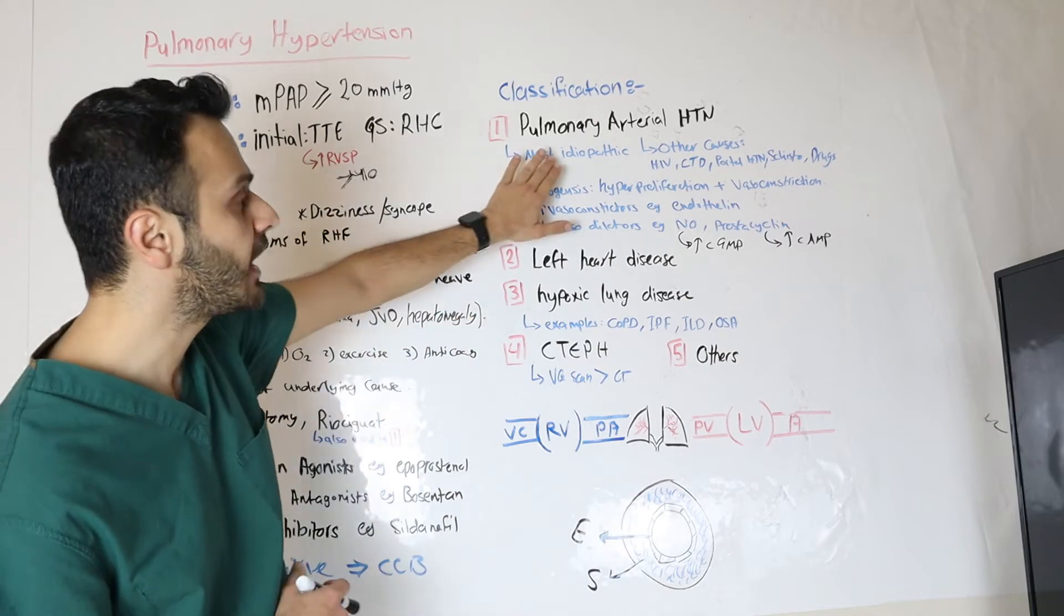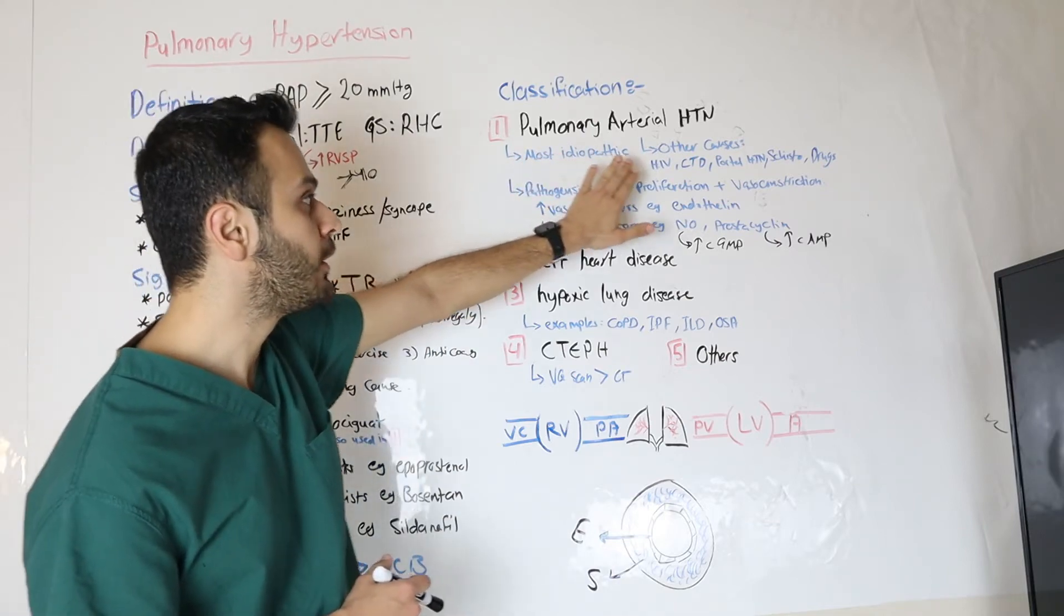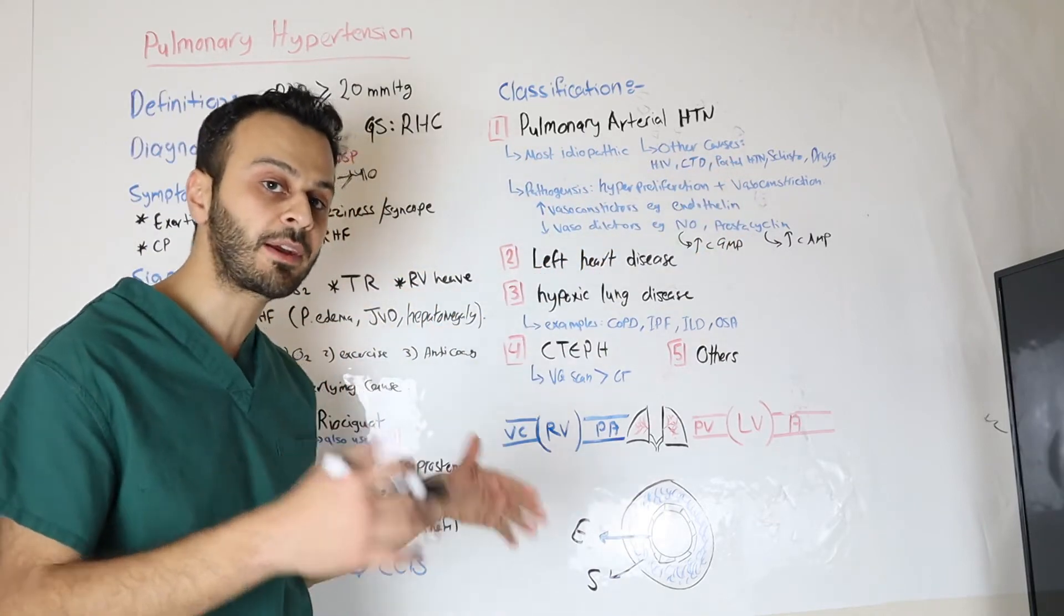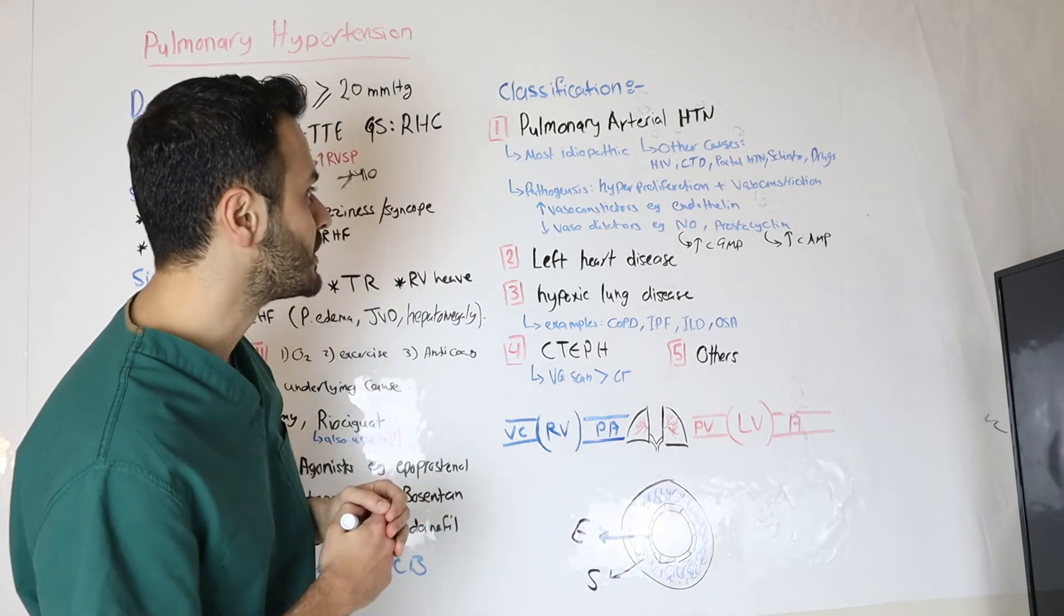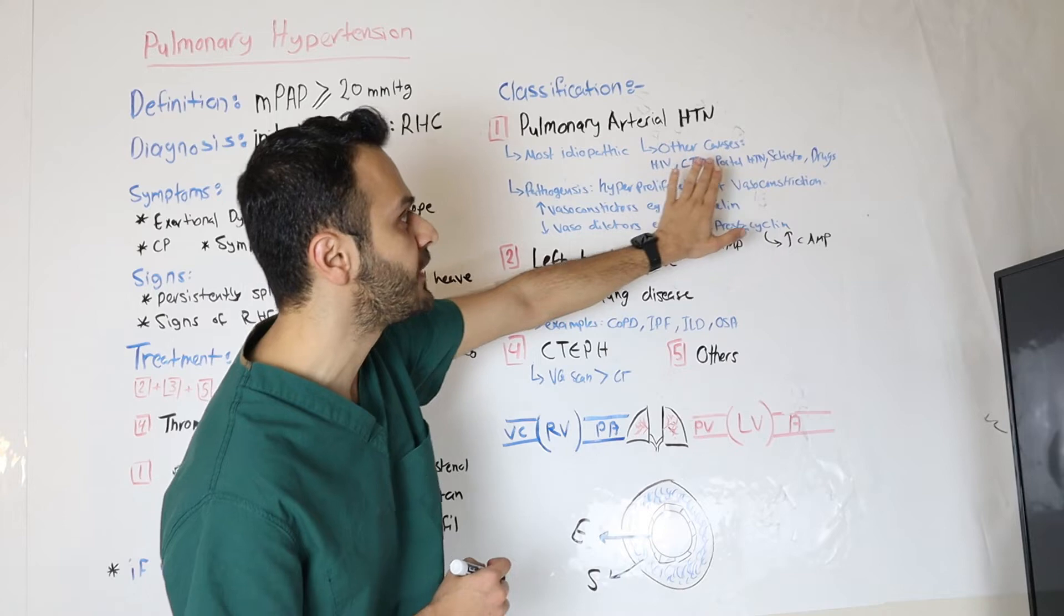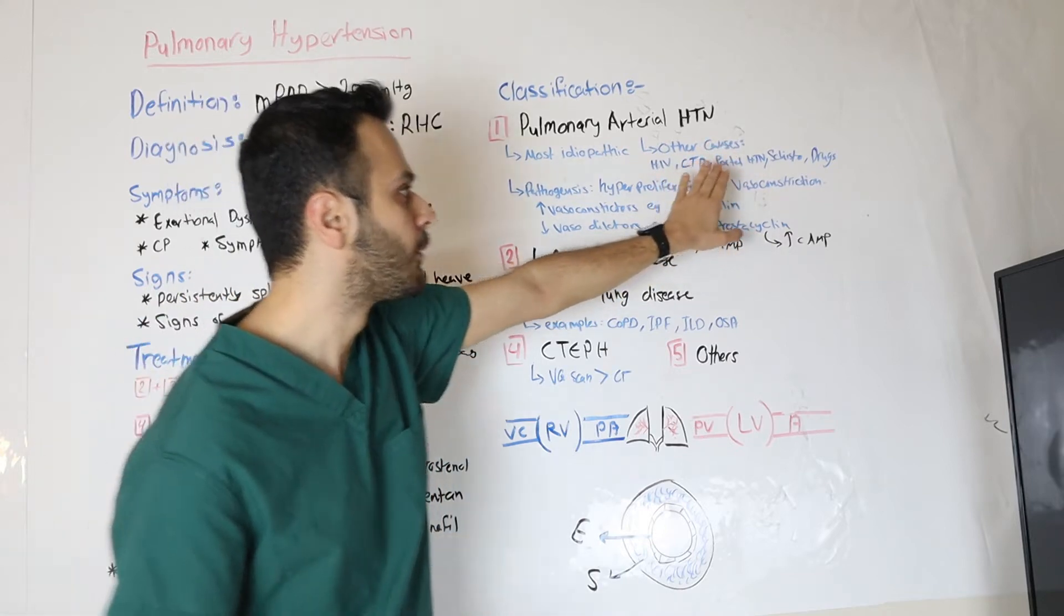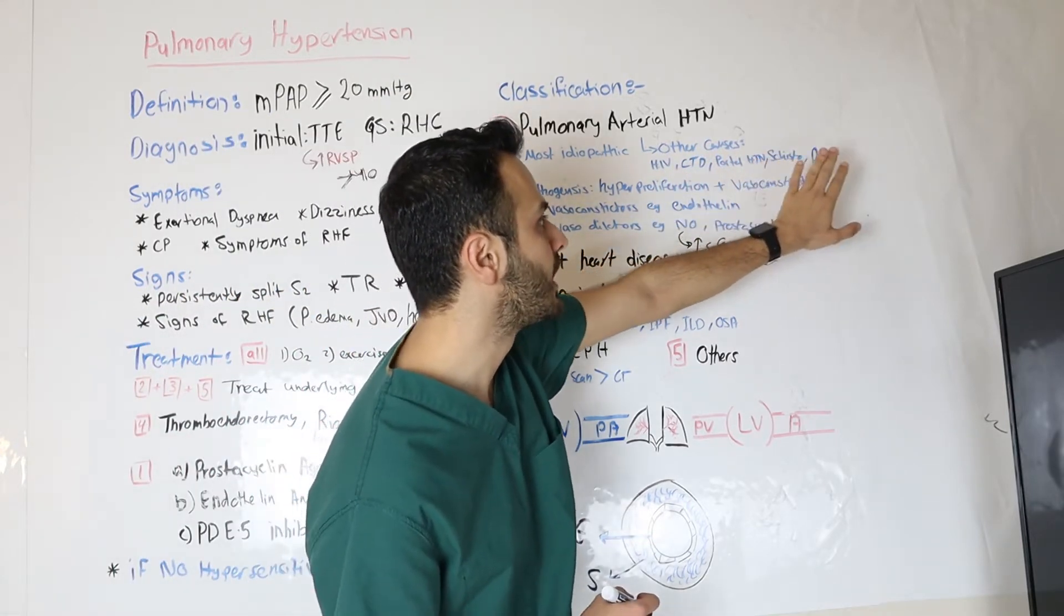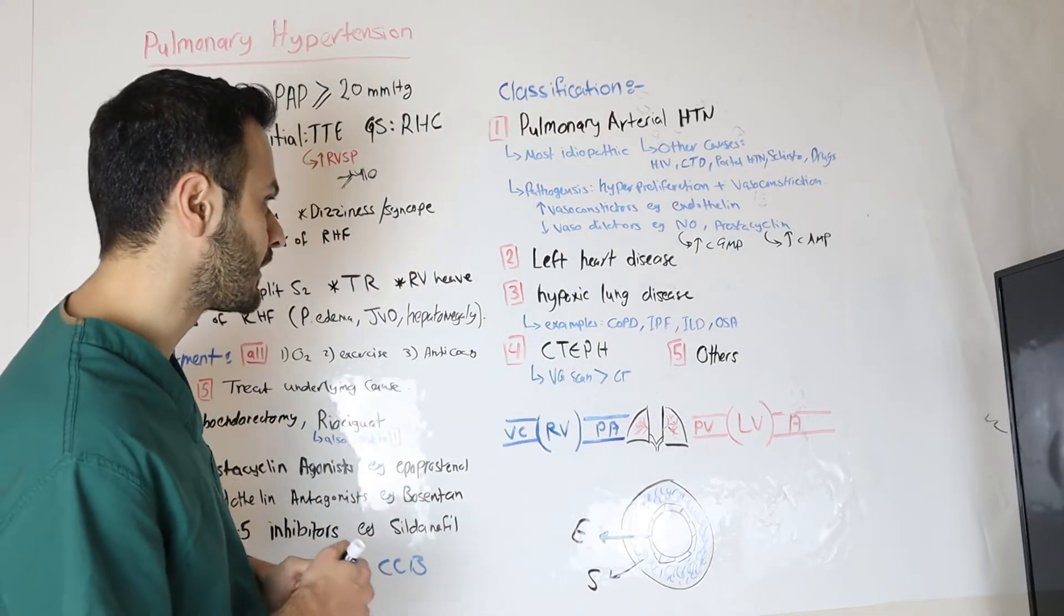What causes that? A lot of times, it's idiopathic, but we know that there are some conditions that predispose the patients to developing this class, such as HIV, connective tissue disease, portal hypertension, schistosomiasis, and certain drugs such as cocaine and amphetamine.